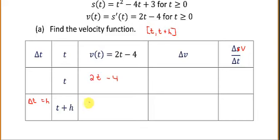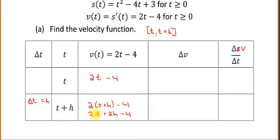The velocity at the right end, v of t plus h, is 2 times the quantity t plus h minus 4, which equals 2t plus 2h minus 4. Subtracting the left end from the right end: 2t minus 2t cancels, and negative 4 minus negative 4 also cancels, leaving just 2h.